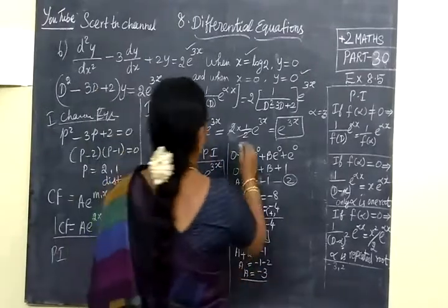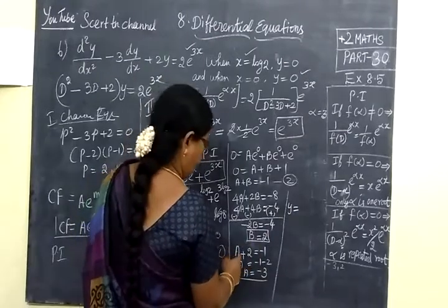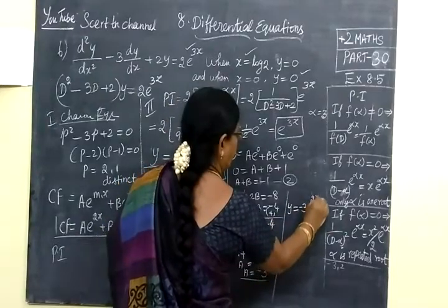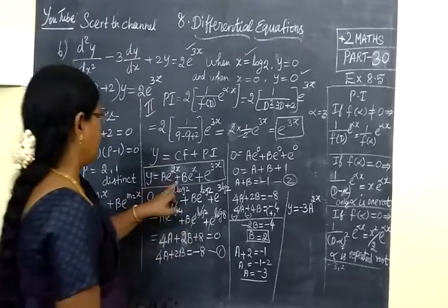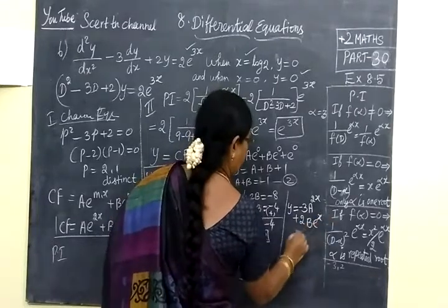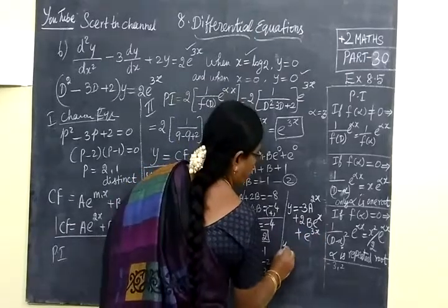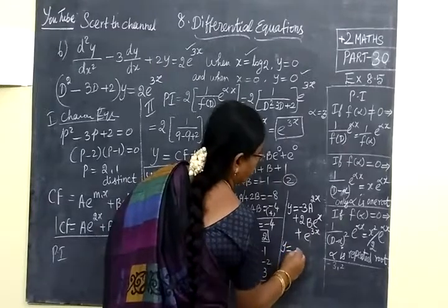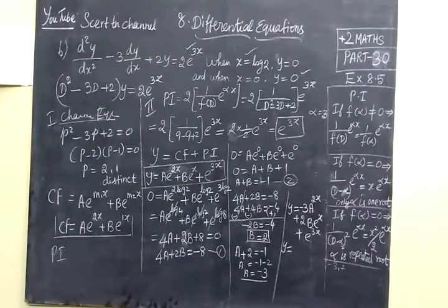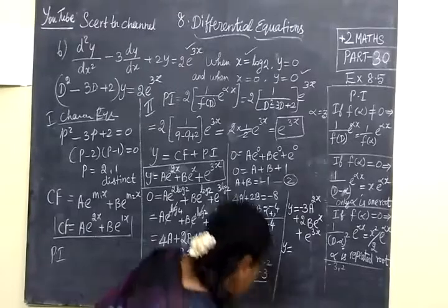Now substitute in the solution. y = -3e^(2x) + 2e^x + e^(3x). Now so y = for A you are writing -3, so -3e^(2x), then for B you are writing 2e^x, plus e^(3x).